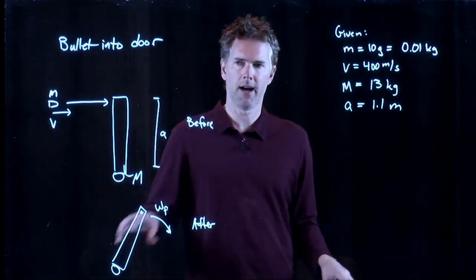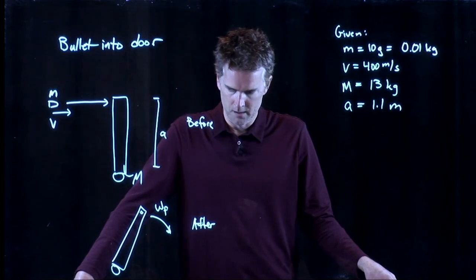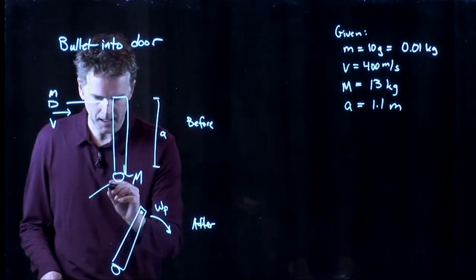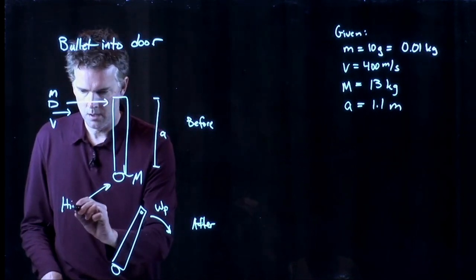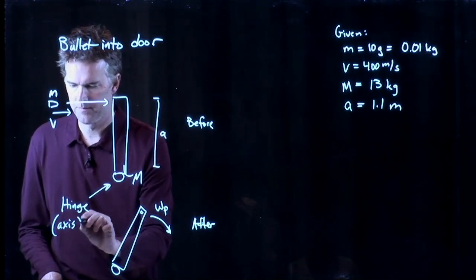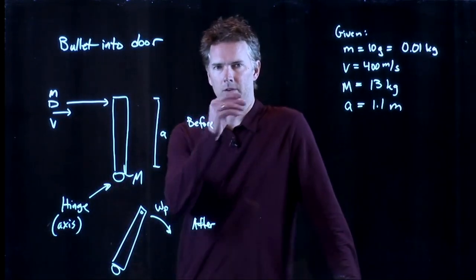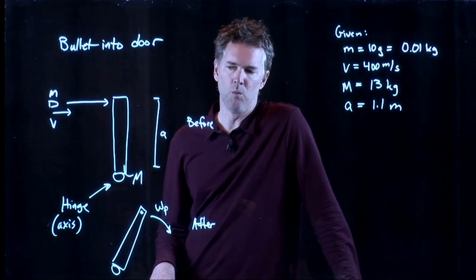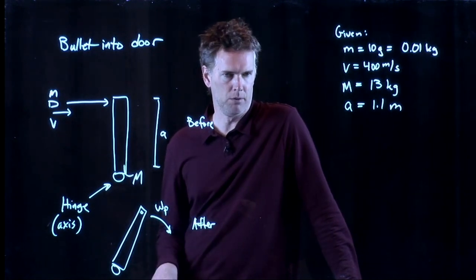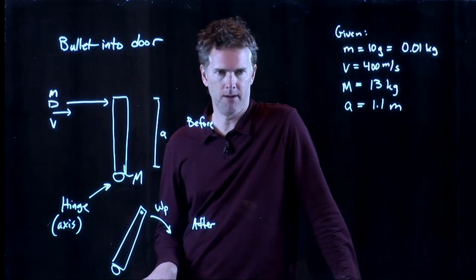And now we want to figure out how to solve this problem for omega F. All right, this is indicating the hinge. That's our axis of rotation. So let me ask you guys, how do I attack this problem? What principle might I employ here to solve this problem? Anybody have a thought?